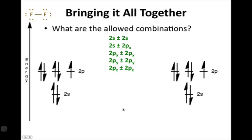But there's a little problem here. Remember I said before, eight atomic orbitals in means eight molecular orbitals out, but we've listed ten combinations here.